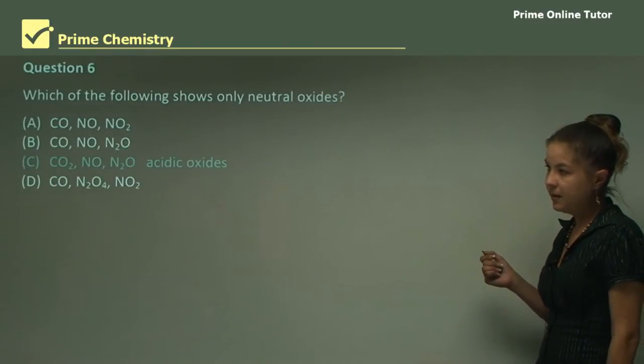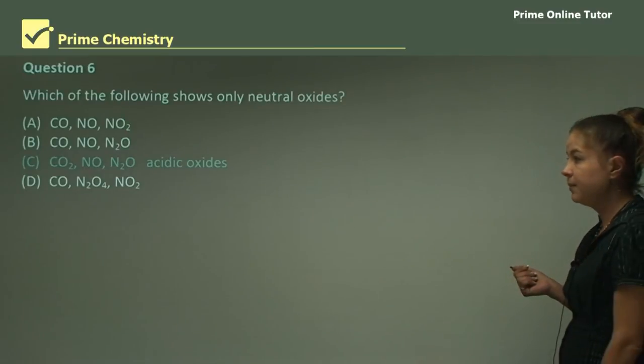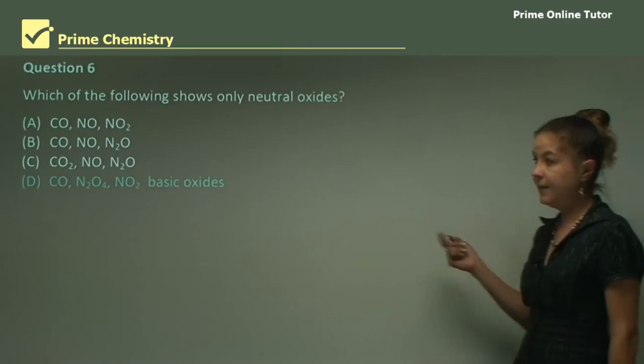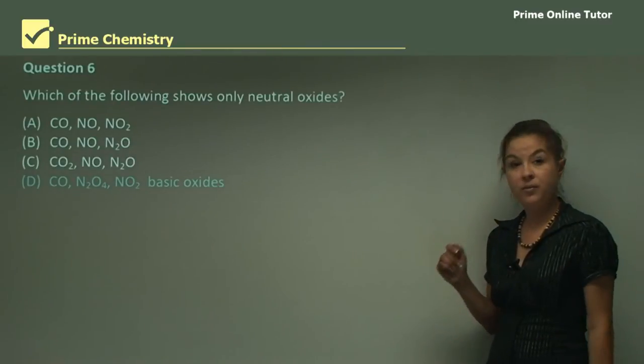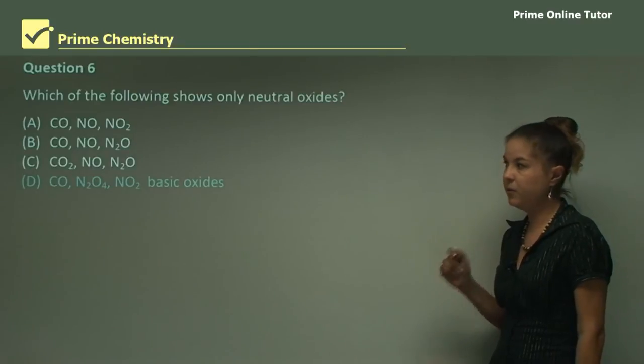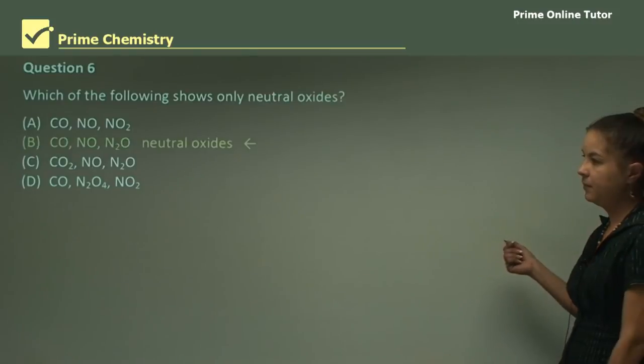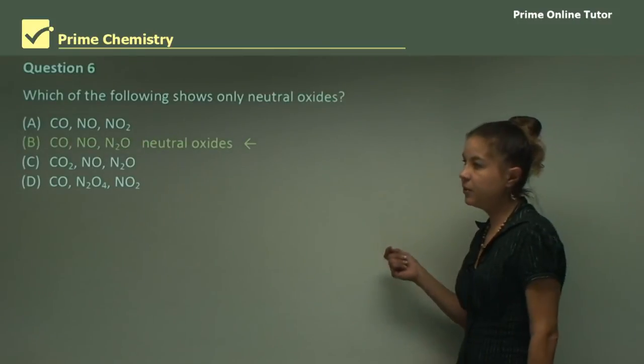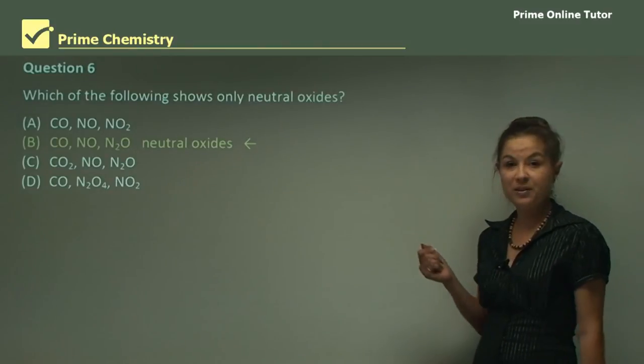Looking at part C: CO2, NO, N2O are all acidic oxides because they're non-metals. CO, N2O4, and NO2 are actually basic oxides. Those ones you have to remember are basic, not acidic. So which ones are only neutral? Our answer is part B: carbon monoxide, nitrogen monoxide, and dinitrogen oxide. That's the answer for question six.